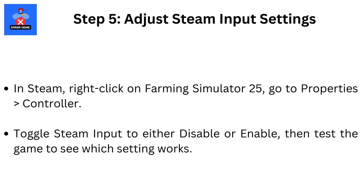Step 5: Adjust Steam Input Settings. In Steam, right-click on Farming Simulator 25, go to Properties, then Controller. Toggle Steam Input to either Disable or Enable, then test the game to see which setting works.